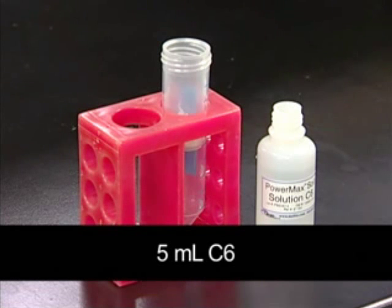Next, 5 milliliters of solution C6 is poured onto the center of the filter membrane.